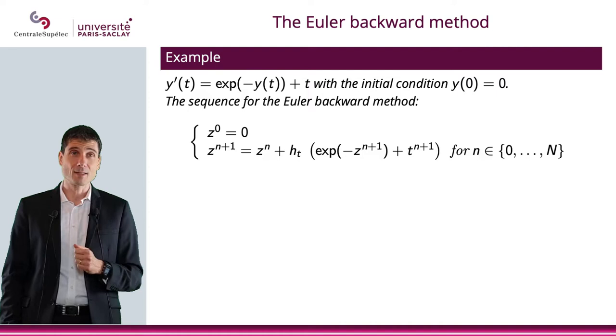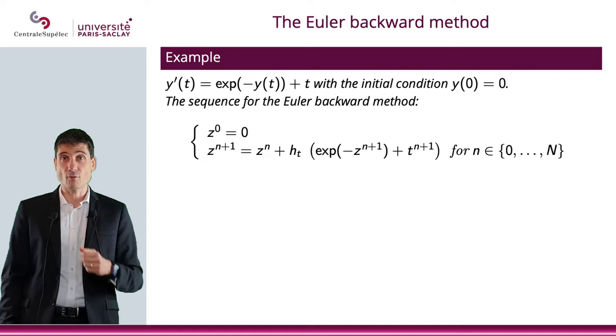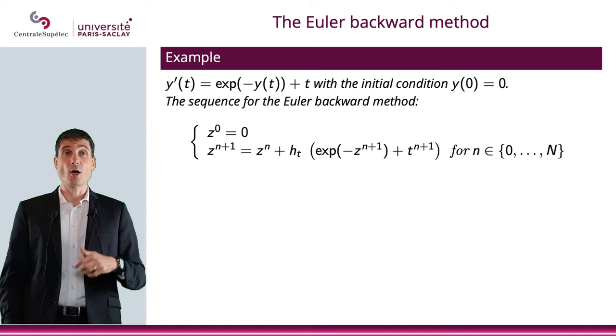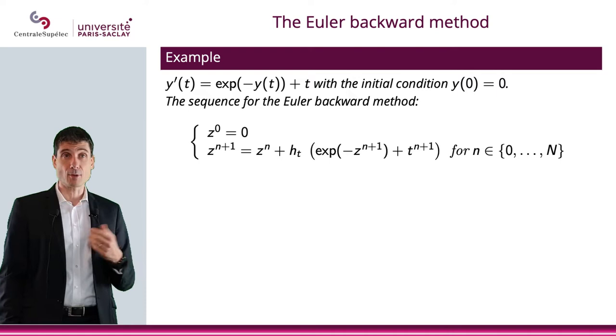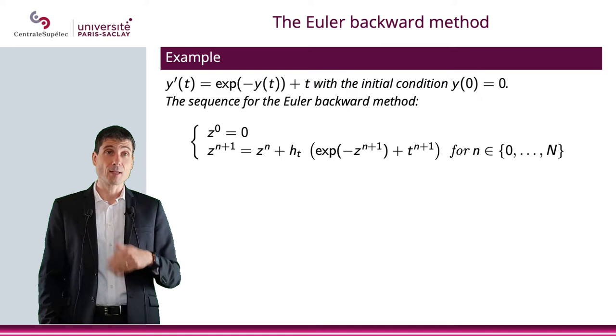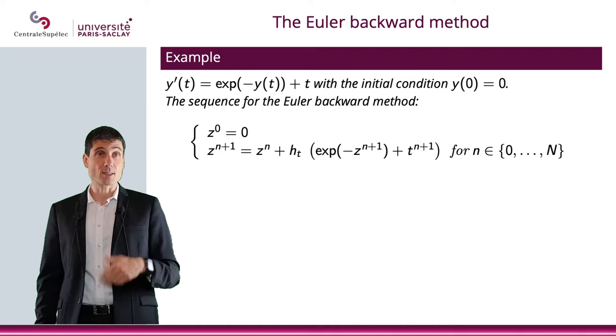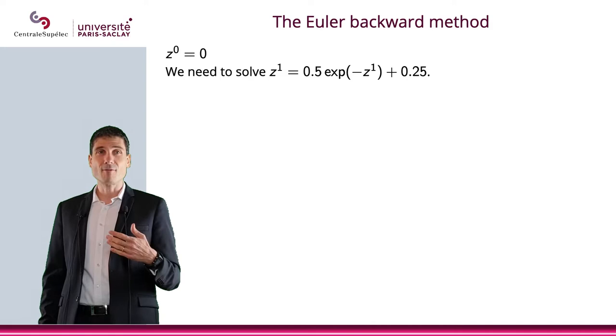Let me give you an example. Let's try to solve the equation we solved earlier in section 4.1 with the Euler forward method. Let's approximate the solution now with the Euler backward method. So, z⁰ = 0, zⁿ⁺¹ = zⁿ + hₜe⁻ᶻⁿ⁺¹⁺ᵗⁿ⁺¹. Let's get started.